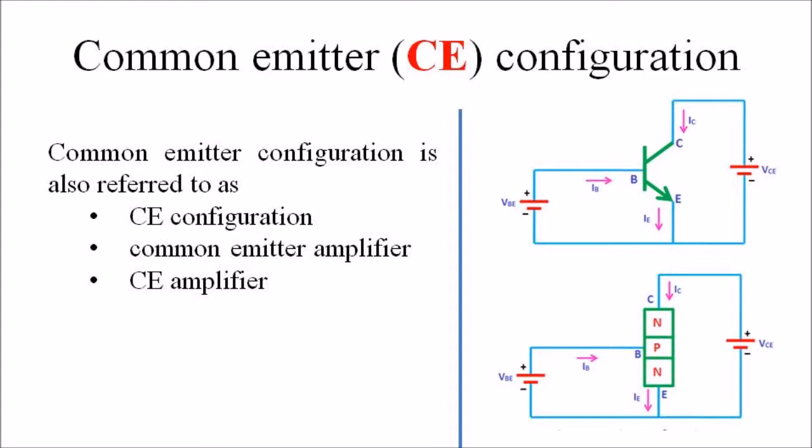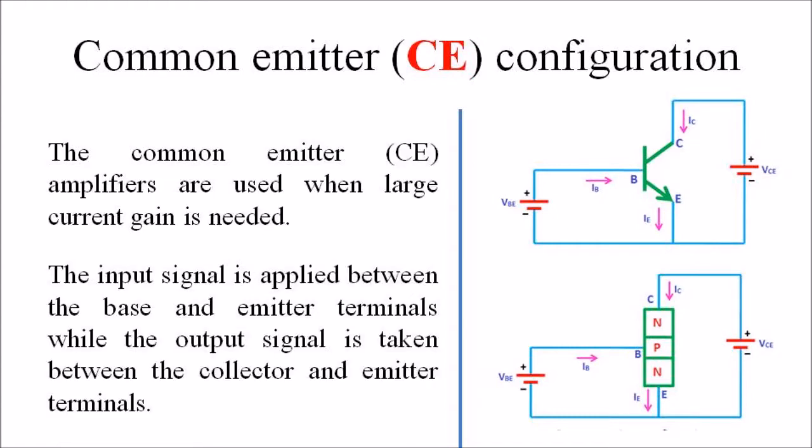The common emitter configuration is the most widely used transistor configuration. CE amplifiers are used when large current gain is needed. The input signal is amplified between the base and the emitter terminal, while the output signal is taken between the collector and the emitter terminal. Thus the emitter terminal is common for both input and output, and hence it is named common emitter configuration.